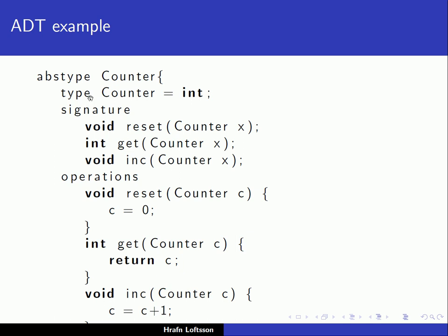Let's give an example. We have an abstract data type called counter — this is in our pseudo language. We use a keyword 'abs type' and the name of the abstract data type is counter. The counter is actually implemented as an integer. On the signature side, which is really the interface side, we have three functions: reset to reset the counter, get to get the value, and inc to increment the counter.